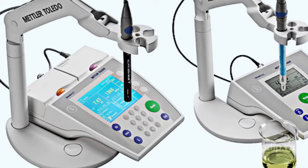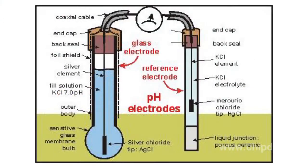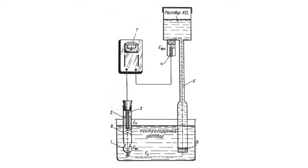The pH value of a solution can be accurately measured with the help of a pH meter, which is in fact a kind of potentiometer. A pH meter is based on measuring the EMF of a galvanic cell consisting of a glass electrode with a potential depending on the pH, and a comparison electrode, both placed into the solution being tested. The EMF of the system is registered with the help of a millivolt meter.